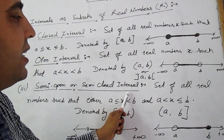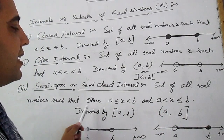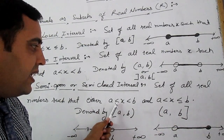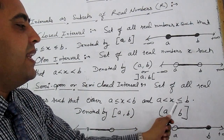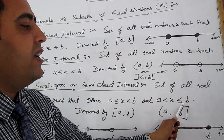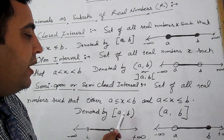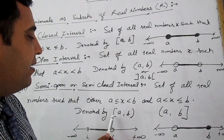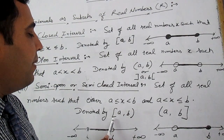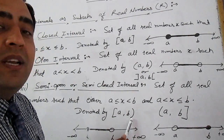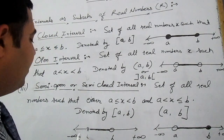The third one is the semi-open or semi-closed interval: the set of all real numbers x such that either a is less than or equal to x is less than b, or a is less than x is less than or equal to b. It is denoted as [a, b) when a is included and b is not, using a big bracket on the side of a and a small bracket on the side of b.